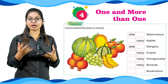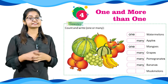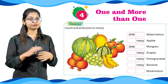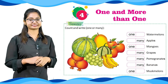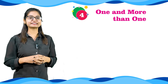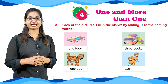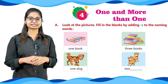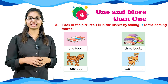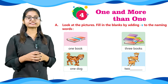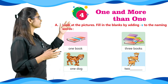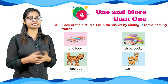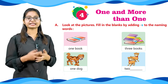Next we have muskmelon. As there is just one muskmelon, so what would we write? One muskmelon. Okay students, let's read Part A: Look at the pictures and fill in the blanks by adding S to the naming words.